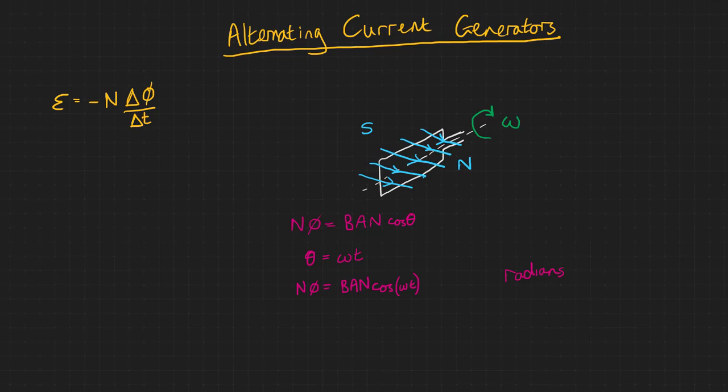If we differentiate cos ωt with respect to t we get minus ω sin ωt. So our equation becomes EMF is equal to BANω multiplied by sin ωt.